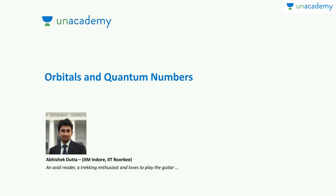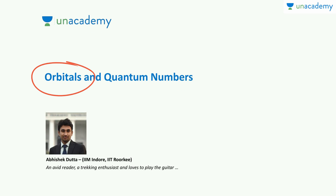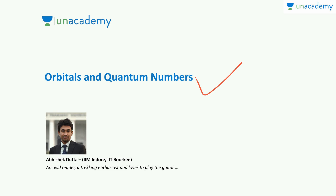Welcome to an academy once again. This video is about quantum numbers as well as what we mean by orbitals. Quantum numbers — the three quantum numbers together define the energy state of an electron. We will learn more about them in this video. I am Abhishek Datta. So let's begin.